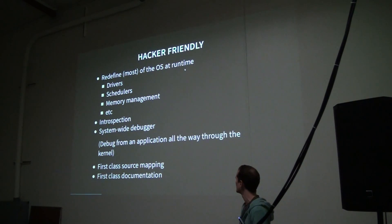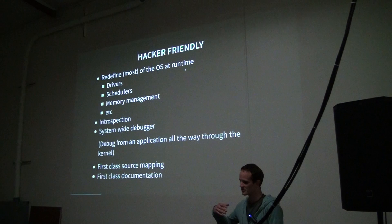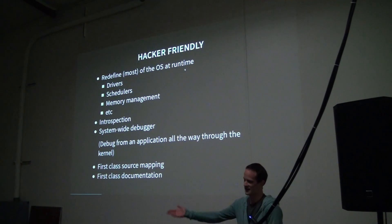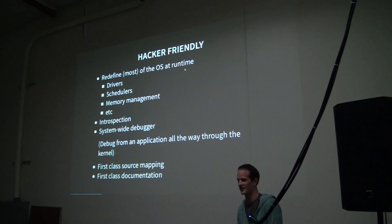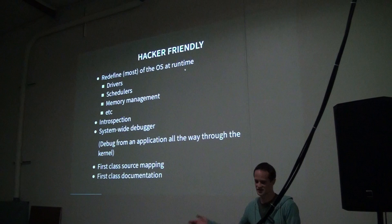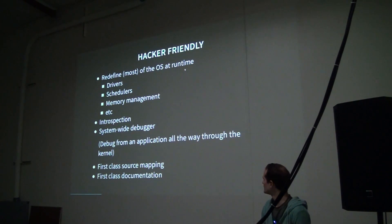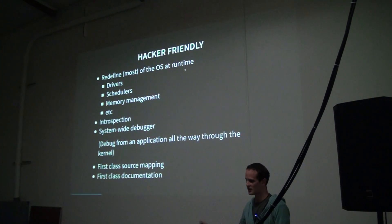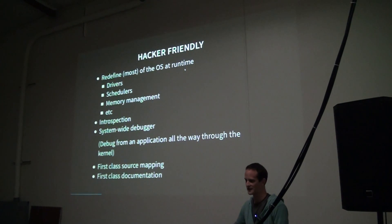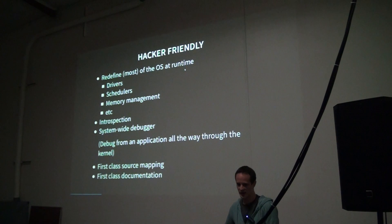There's a system-wide debugger, so you can run into a bug with your web application, debug it through the browser all the way into the kernel and find out it's allocating memory the wrong way. You can post the entire stack trace on Stack Overflow so somebody can actually see the full picture. First-class source mapping, which I'll show an example of. First-class documentation — you can write code to look at the documentation of anything in the OS and modify it from a REPL, whatever you want.